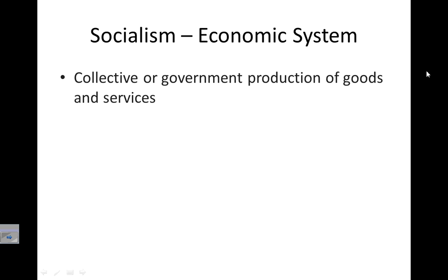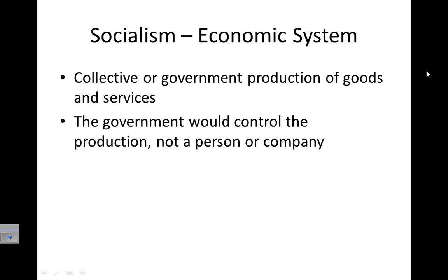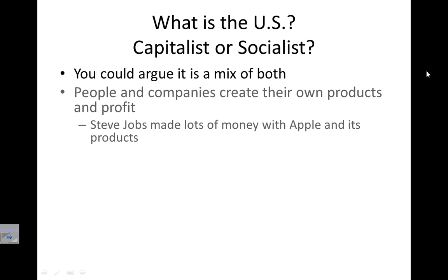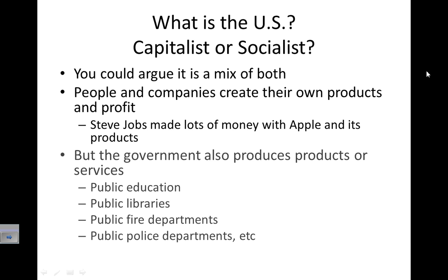Socialism is also an economic system. It's where a collective — a large group of people — or the government produces goods and services. The government controls production, as opposed to capitalism, where a person or company controls it. You could argue the U.S. is a mix of both. People and companies create their own products and profit — for example, Steve Jobs made lots of money with Apple. But the government also produces services, like public education, public libraries, public fire departments, public police departments, and the military, all supported by taxes.